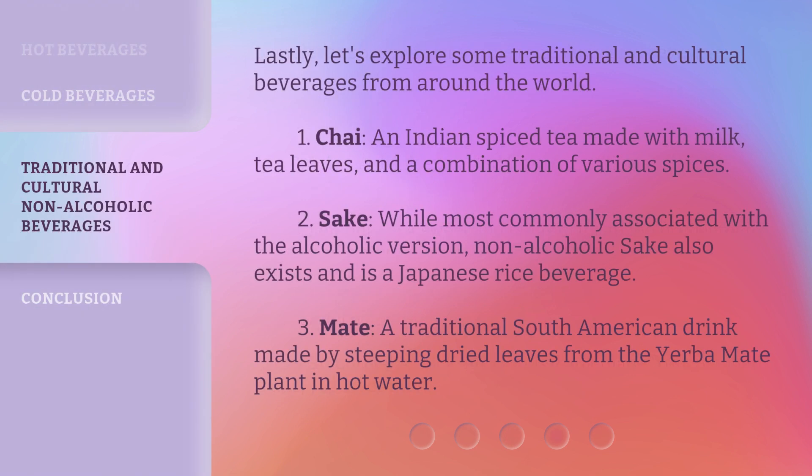Lastly, let's explore some traditional and cultural beverages from around the world. 6. Chai — an Indian spiced tea made with milk, tea leaves, and a combination of various spices. 7. Sake — while most commonly associated with the alcoholic version, non-alcoholic sake also exists and is a Japanese rice beverage. 8. Mate — a traditional South American drink made by steeping dried leaves from the yerba mate plant in hot water.